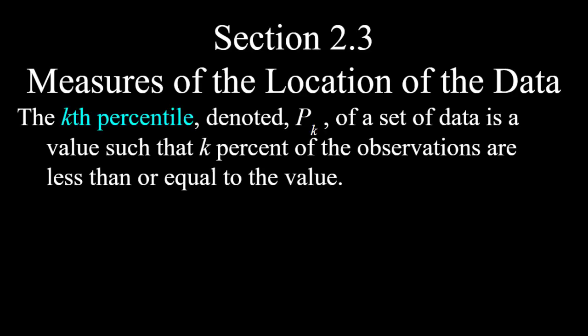For Section 2-3, we will be talking about measures of the location of the data. The first measure we're going to talk about is what is called percentile. The kth percentile, denoted as p subscript k, of a set of data is a value such that k percent of the observations are less than or equal to that value.